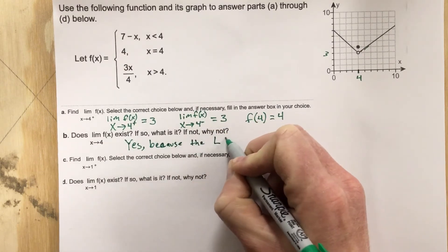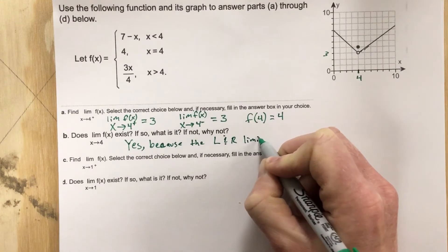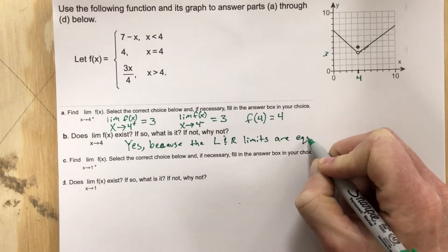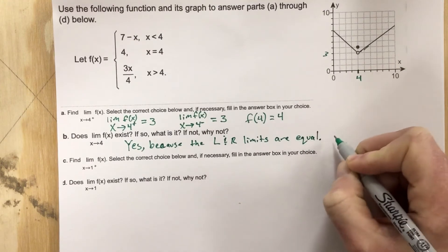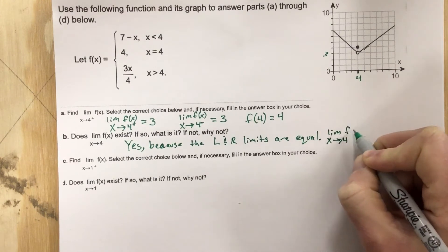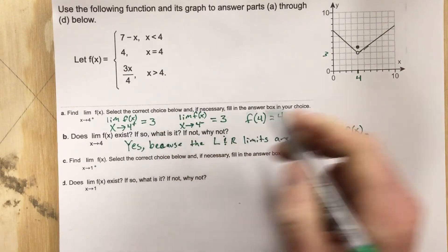the left and right limits are equal, and so we'd say the limit as x approaches 4 of f(x) equals, well what are the two limits equal? They equal 3.